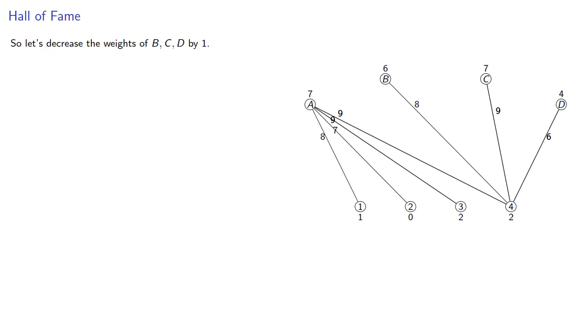So let's decrease the weights of just B, C, and D by 1 and increase the weight of vertex 4 by 1. This gives us a new equality graph.